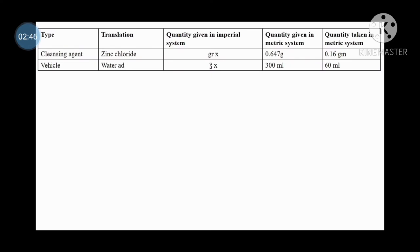Then Observation Table in that 5 columns: Name, Translation, Quantity given in Empirical System, Quantity given in Metric System, Quantity taken in Metric System. So Zinci Chloridi which is used as a cleansing of eyes. Quantity given in Empirical System that is Grain 10. Quantity given in Metric System 0.647 g. Quantity taken in Metric System 0.16 g.